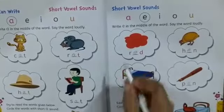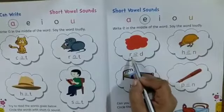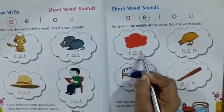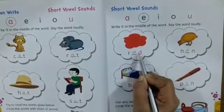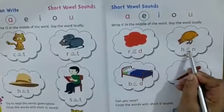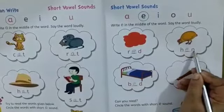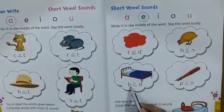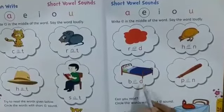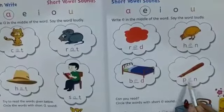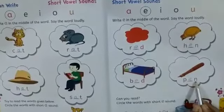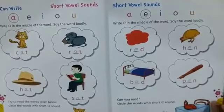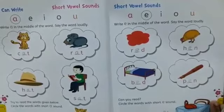Now we learn the words. R, E, D — Red. H, E, N — Hen. B, E, D — Bed. P, E, N — Pen. These are the words that we have to learn.